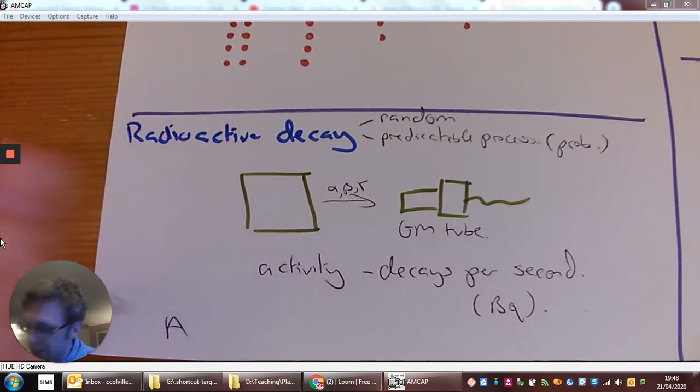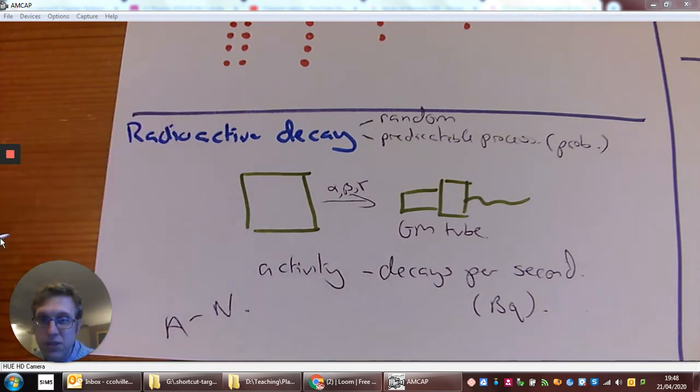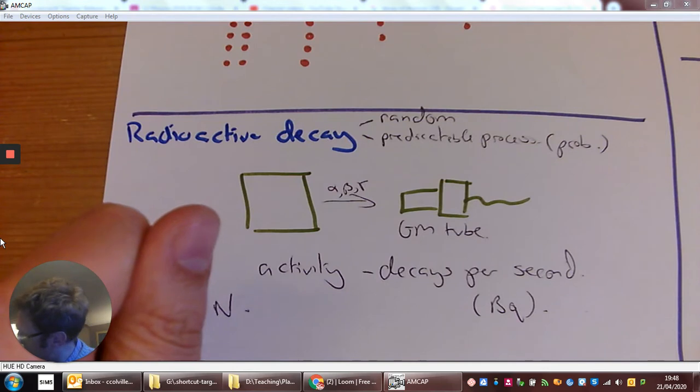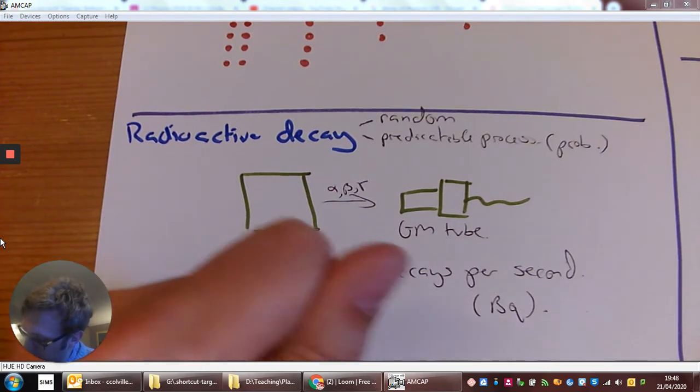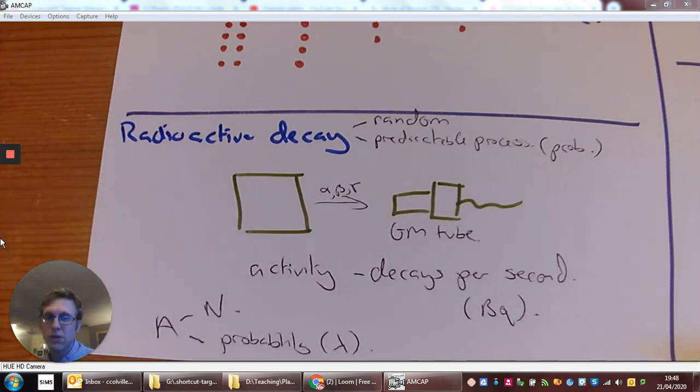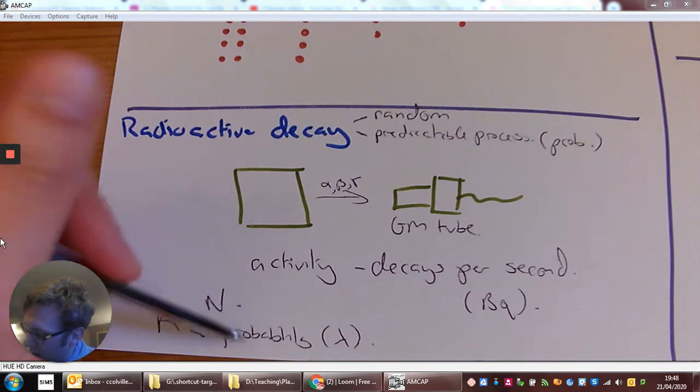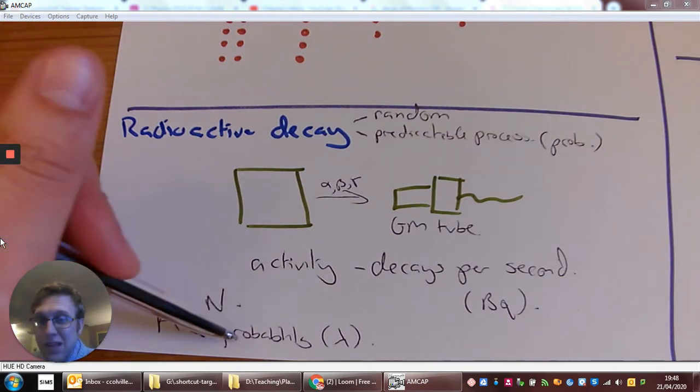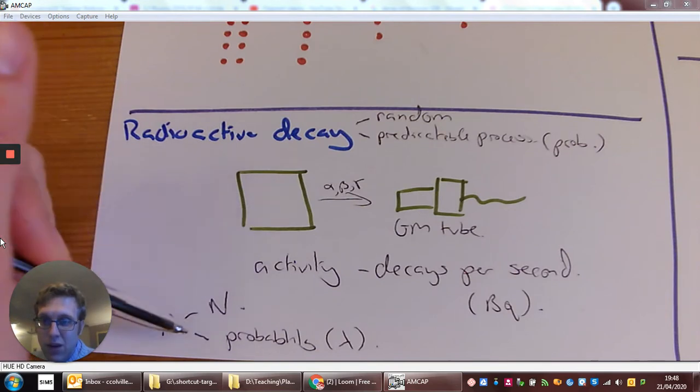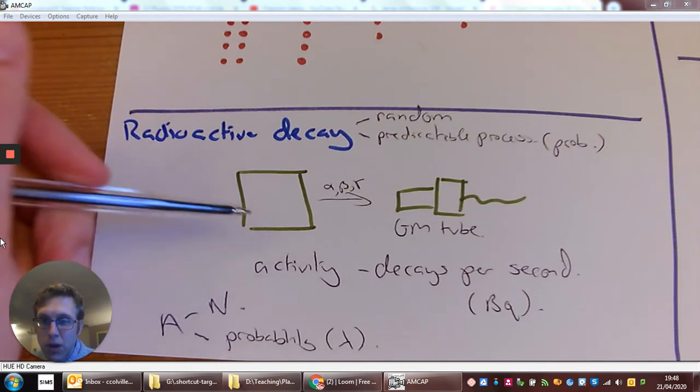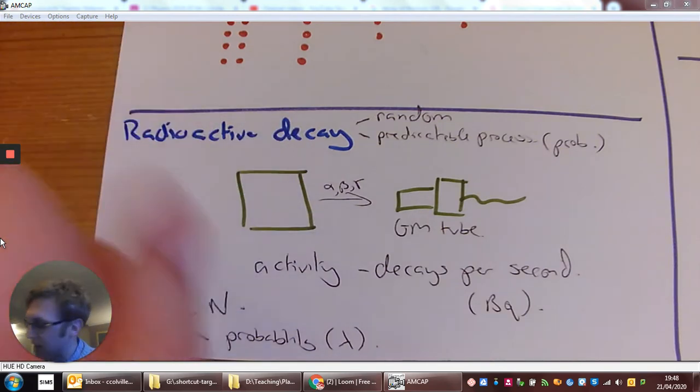Our activity is going to depend on two things. It's going to depend on the number of particles inside that box, and it's also going to depend on the probability of a decay. We refer to that as the decay constant. If I've got a higher chance of a particular atom decaying, I'm going to get more given out every second. If I've got more particles inside that box, more of them are going to decay every second, so I'm going to have a higher activity.